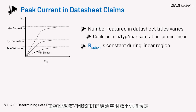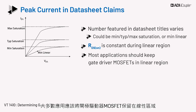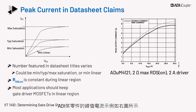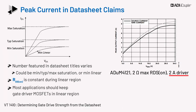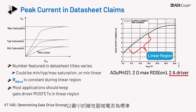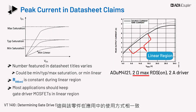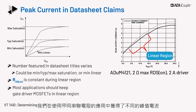RDS on of the MOSFET is almost constant while in the linear region. Most applications should keep gate driver MOSFETs in the linear region. The example peak current of one of ADI's parts is shown in the figure to the right. This part is rated as a 2A driver, since the way ADI rates gate drivers is with the minimum linear region current. For this measurement, an external series resistor of 2 ohms is used, in line with how the part will be used in the application. We obtain a different peak current in an application with a different series resistor.